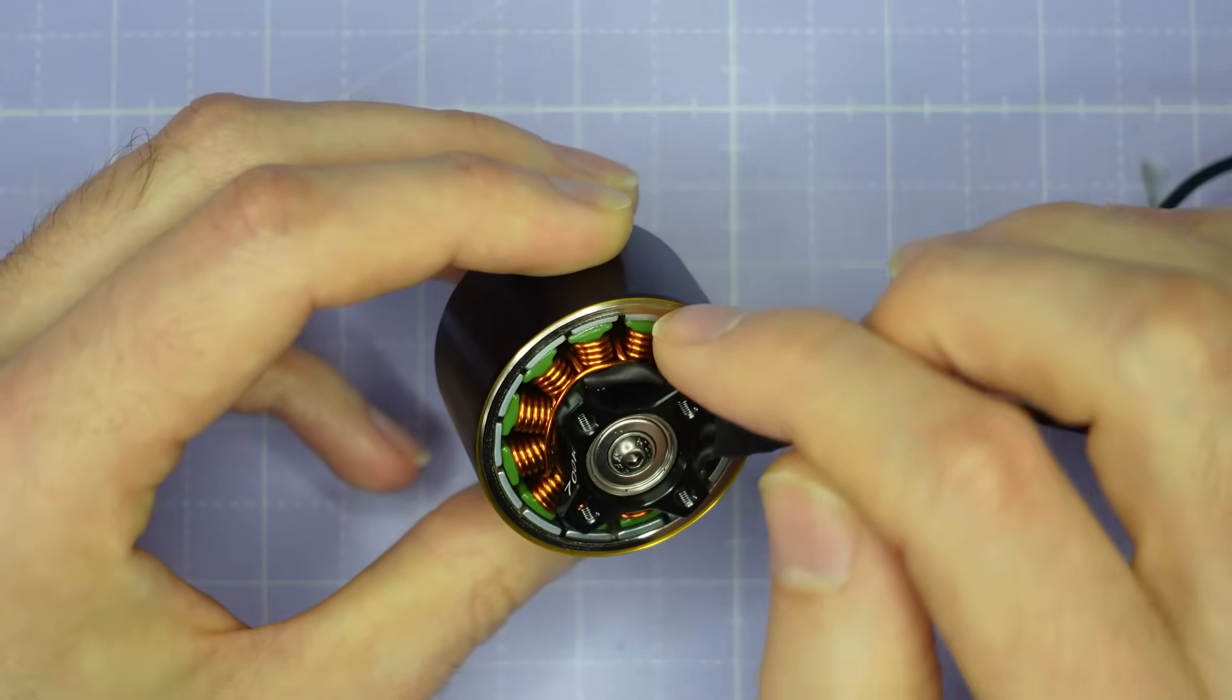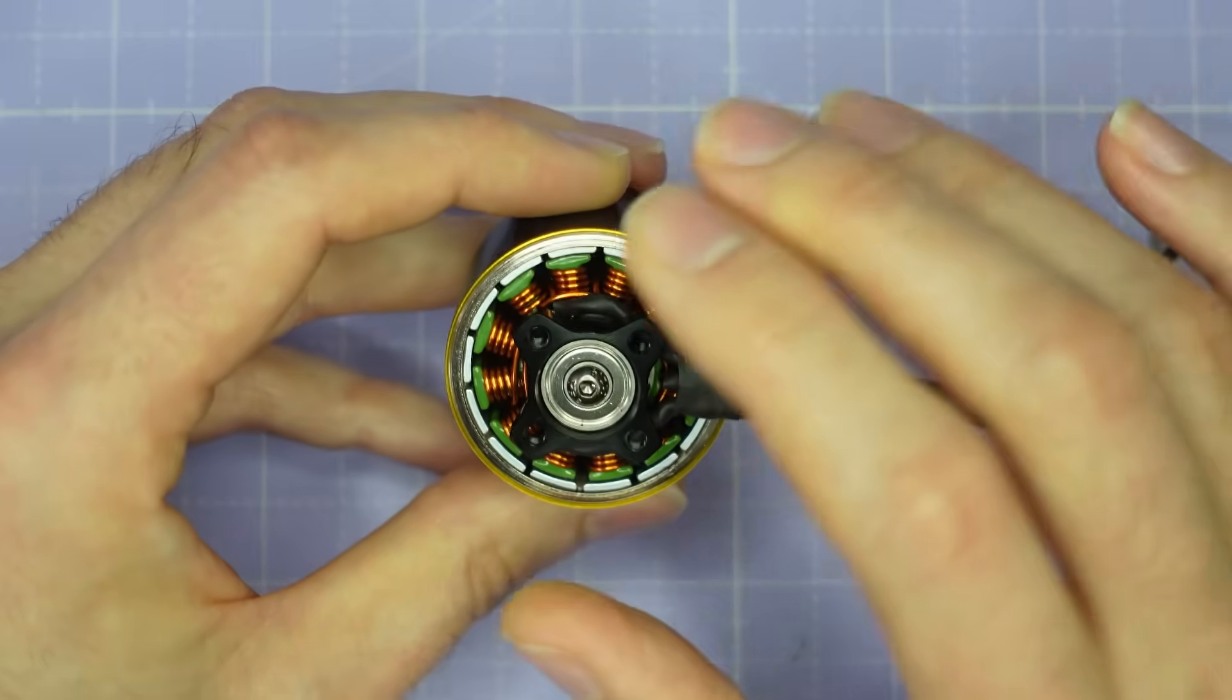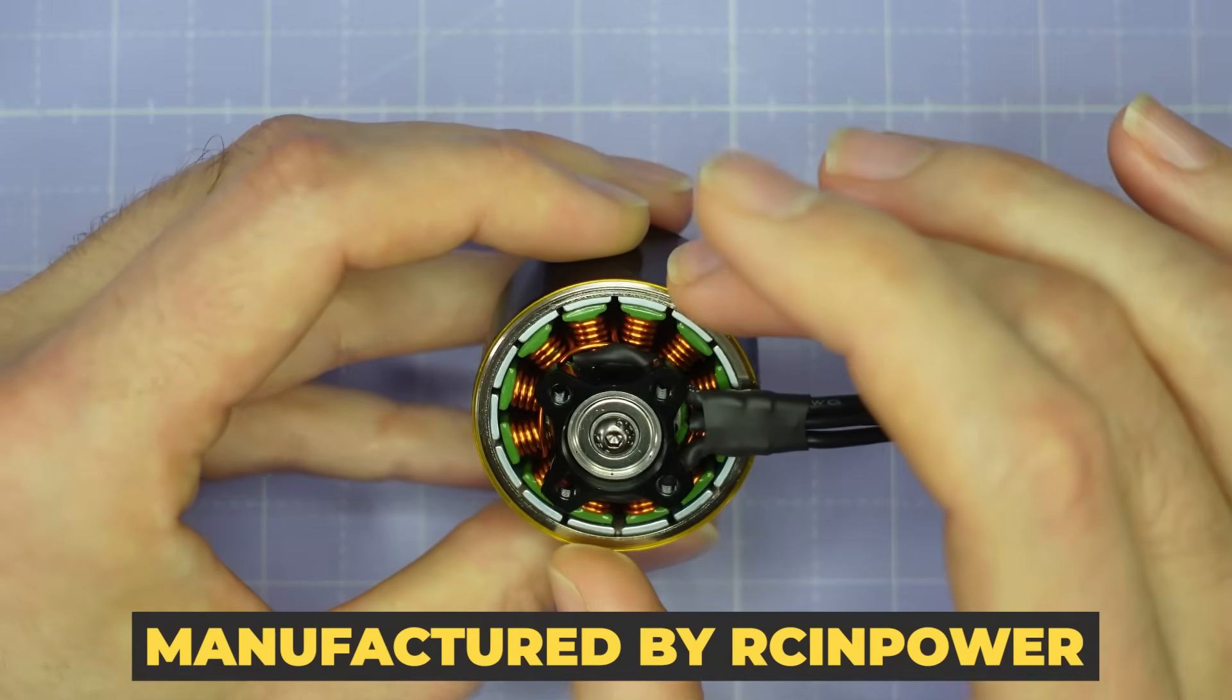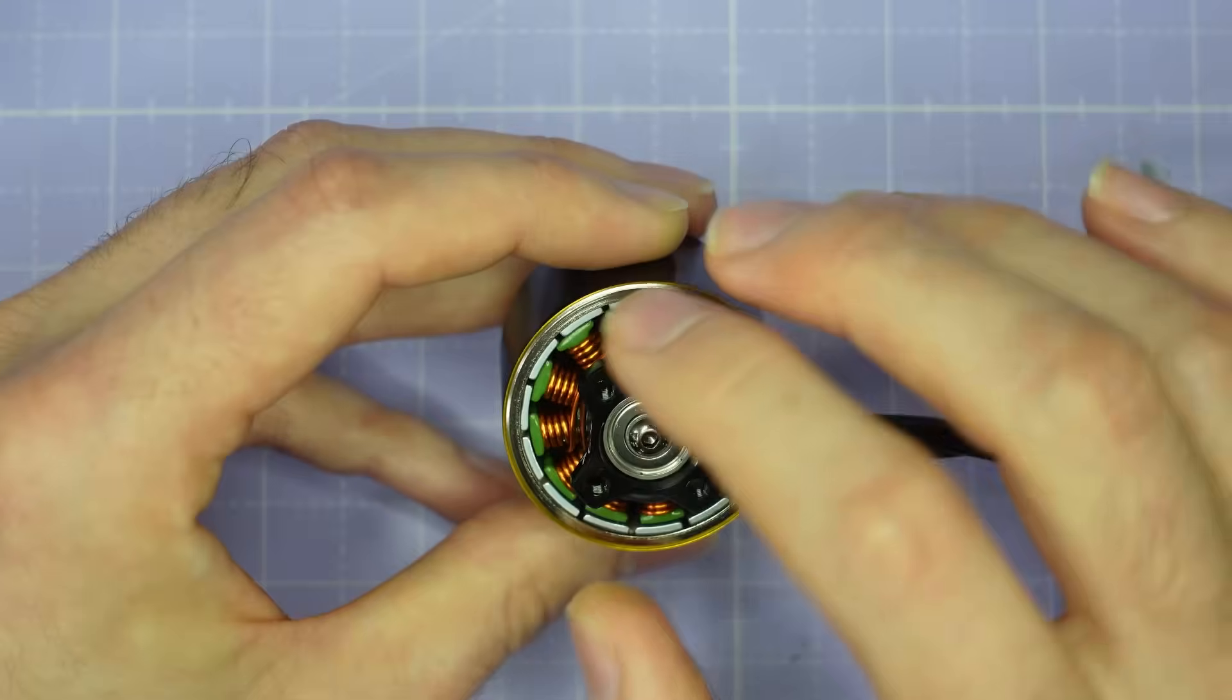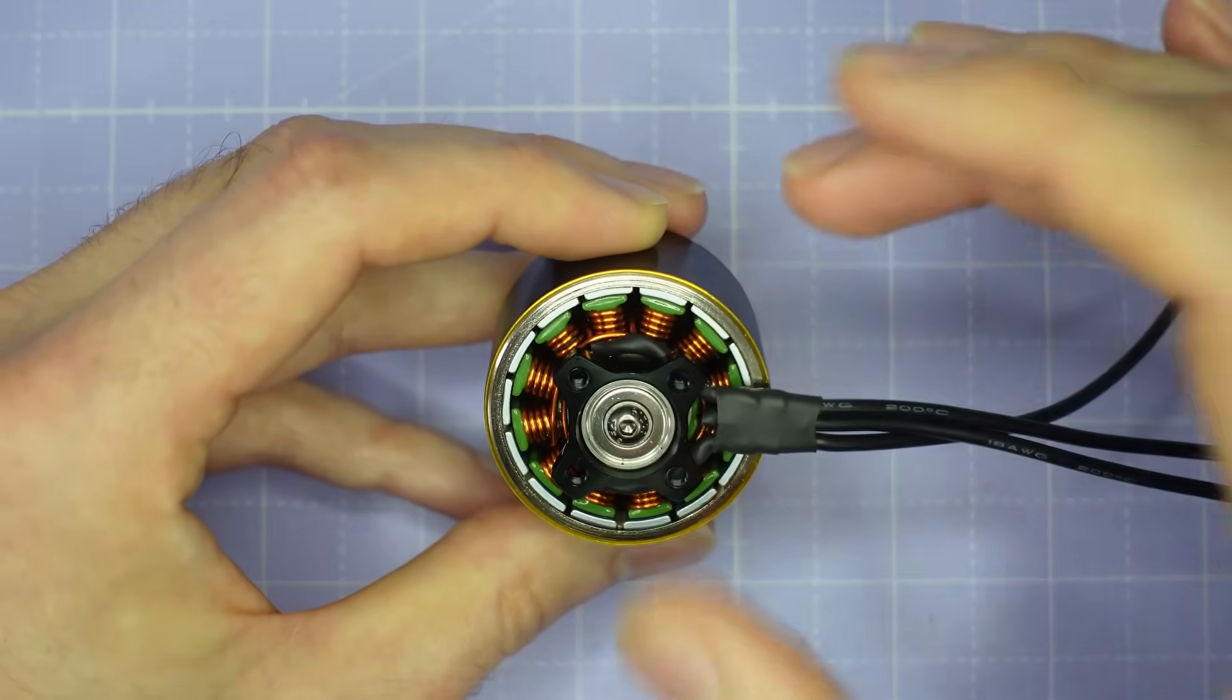In terms of the air gap the air gap is incredibly tight for a 32 millimeter motor and this is down to RC and Power's manufacturing tolerances they're able to hold a very very tight air gap and again that increases the magnetic flux in the air gap to provide more torque and power from the motor.